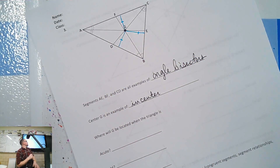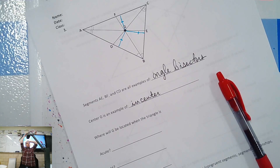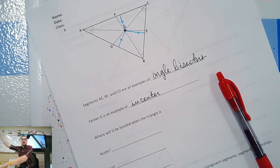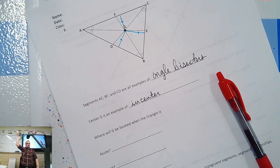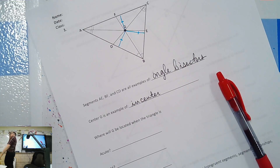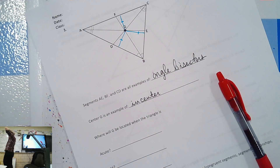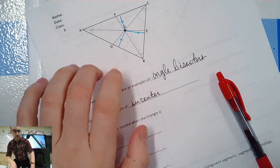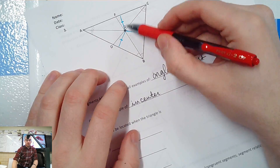When we measure distance to something, we always measure perpendicularly. When you measure the distance from the top of my head to the ceiling, you measure like this — you wouldn't measure at an angle, that would give you a bad reading. So we always measure perpendicularly to the object. When we measure from G to the side of the triangle, we have to choose a line that is perpendicular with the side.